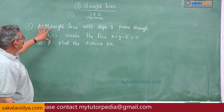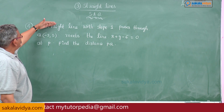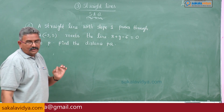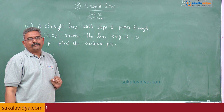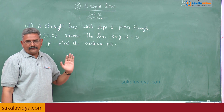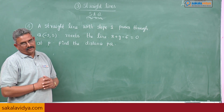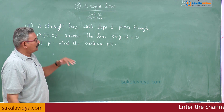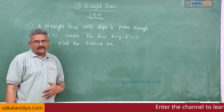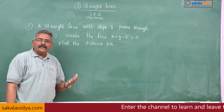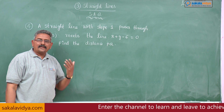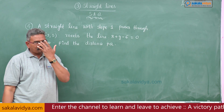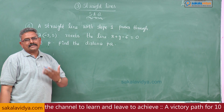Regarding this problem, the slope of the straight line is given as 1, so we know that tan theta equals 1, therefore theta equals 45 degrees. We know the theta value. Now we have to write the parametric equations. The parametric equations are x1 plus r cos theta comma y1 plus r sin theta.